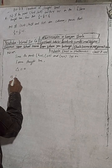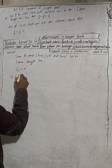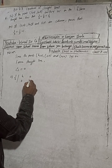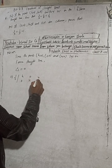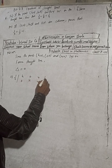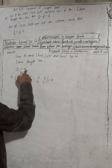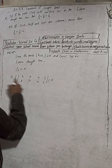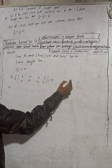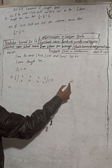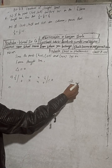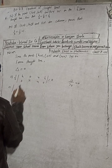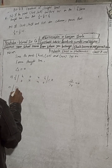This implies half times the determinant with the points h comma zero, zero comma k, and 4 comma 4 is equal to zero. Using the area formula, we expand: half times the expression with coordinates gives us zero.